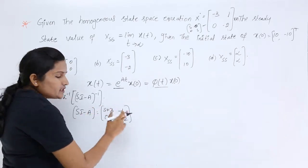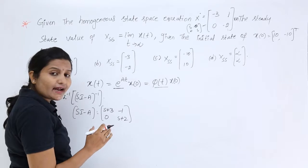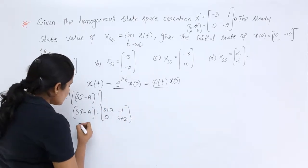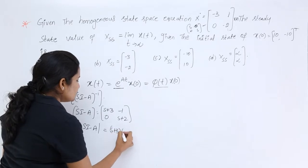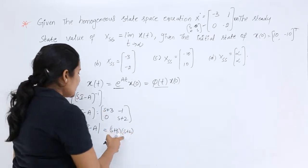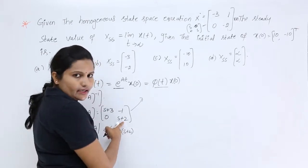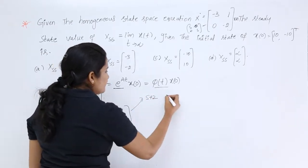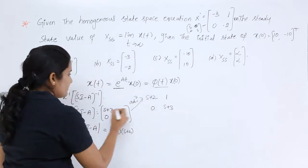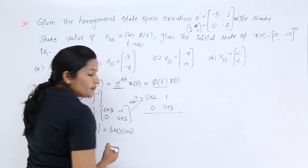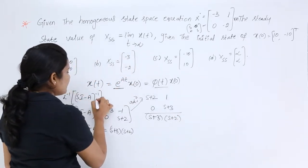Now we need to find (sI - A) inverse. For this we need the adjoint of (sI - A) and the modulus (determinant) of (sI - A). The determinant is (s+3)(s+2). For the adjoint of (sI - A), we write: d = s+2, -b = 1, -c = 0, a = s+3. So the adjoint divided by the determinant (s+3)(s+2) gives (sI - A) inverse.